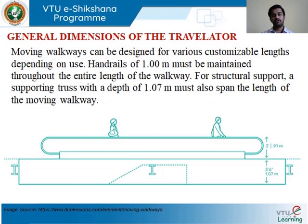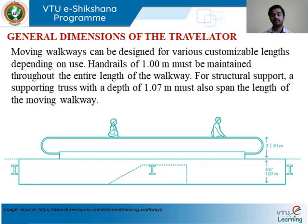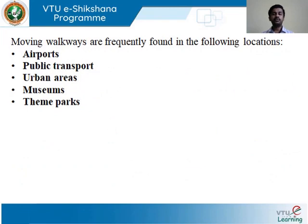The dimensions of a travelator are very similar to those of an escalator when it comes to width. For the elevational dimension, approximately one meter height is provided for the handrail for a normal person to hold for grip while moving. The lower portion is around 1.07 meters, where the truss work and entire mechanism are fitted. The same major components from the escalator apply here — just with inclination at either zero or up to ten to fifteen degrees.